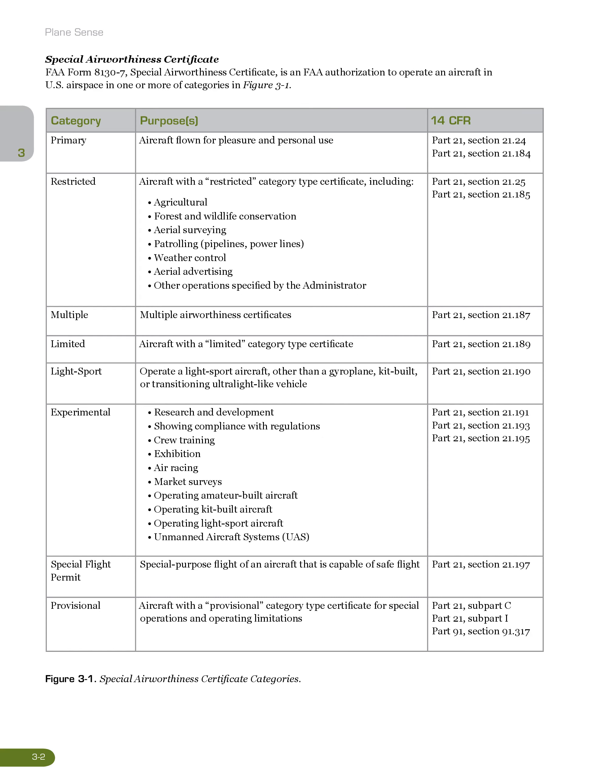Special Airworthiness Certificate, FAA Form 8130-7, is an FAA authorization to operate an aircraft in U.S. airspace in one or more of the categories listed in Figure 3-1.